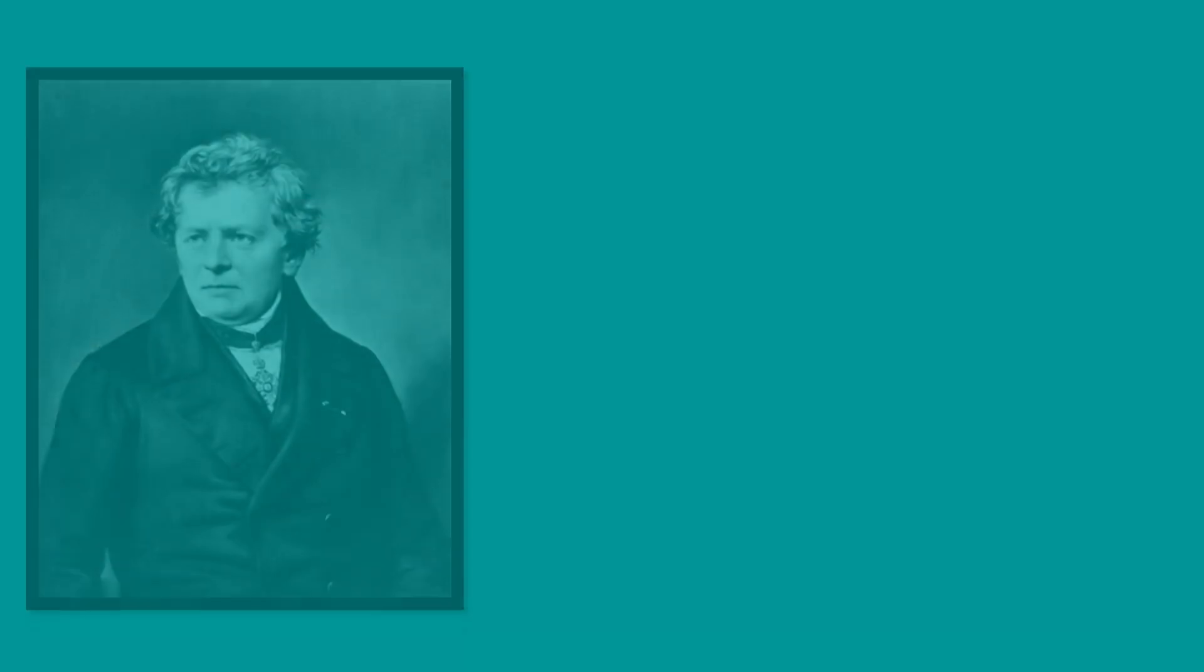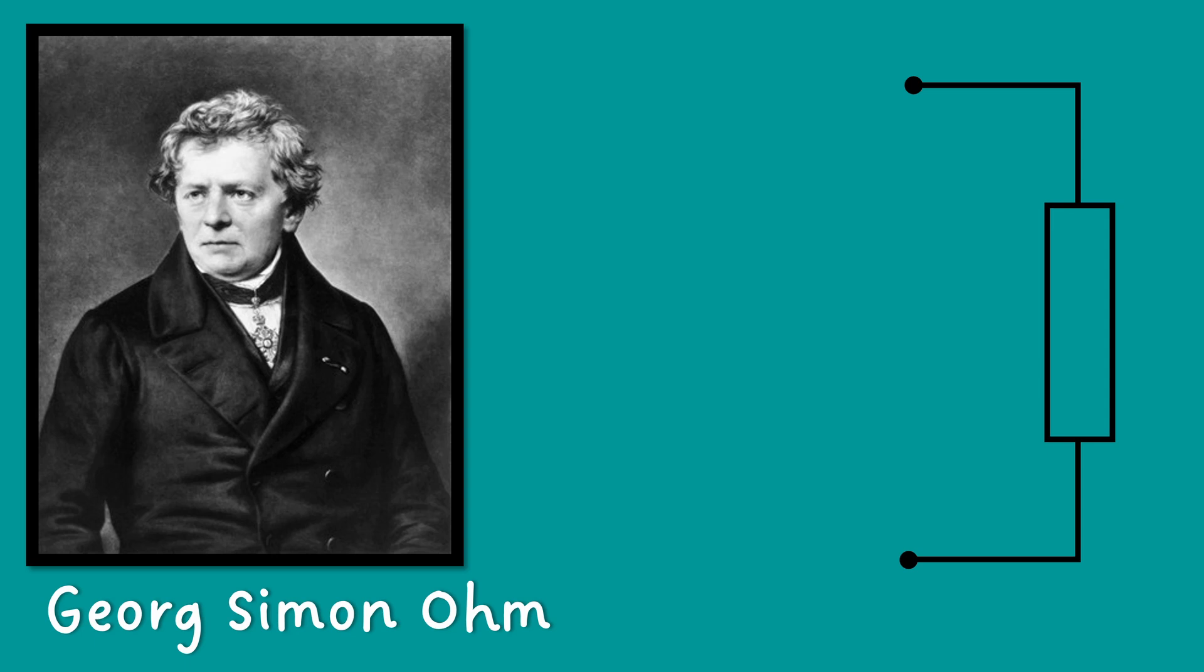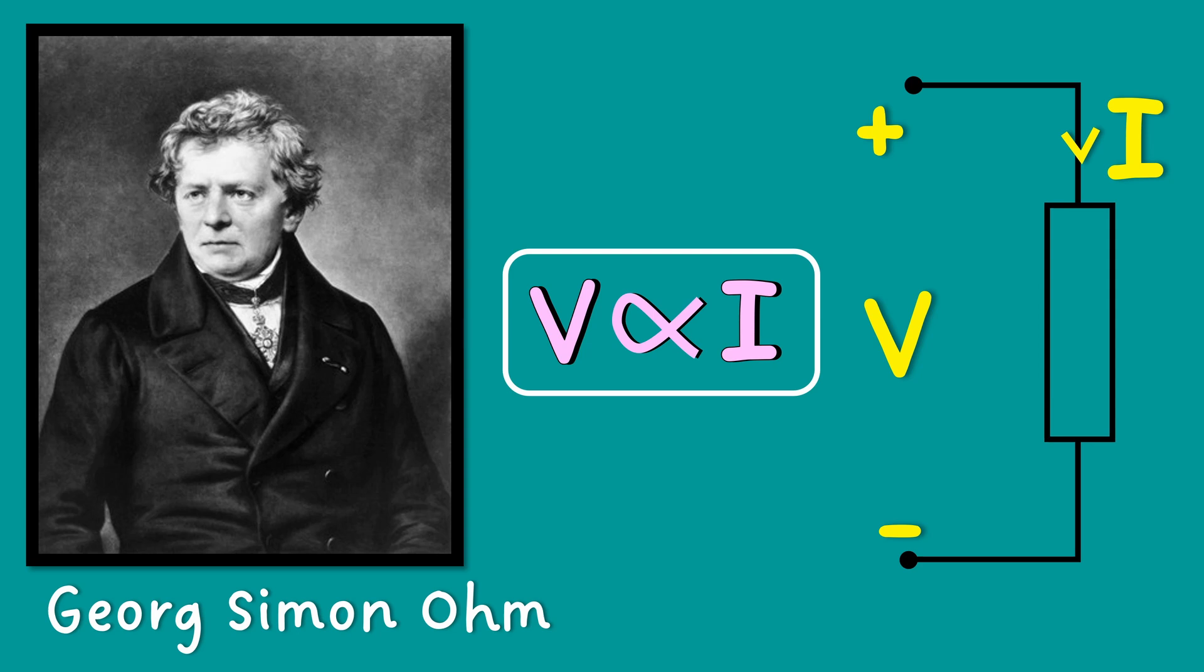The German physicist and mathematician Georg Simon Ohm found experimentally that there is a direct proportionality between the voltage applied across an element and the resultant electric current at a constant temperature. When Ohm published his work in 1827, it was opposed and criticized. Luckily, his work was accepted later during his lifetime. Later, Ohm's Law became one of the most basic and widely used laws of electricity.